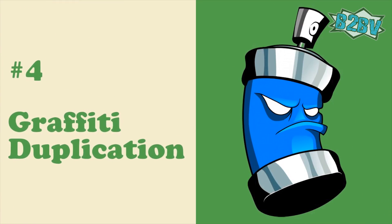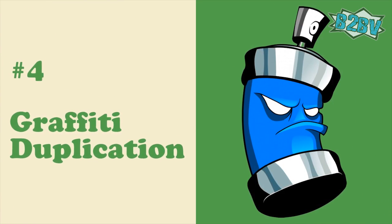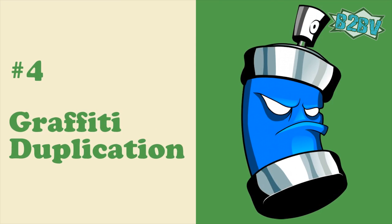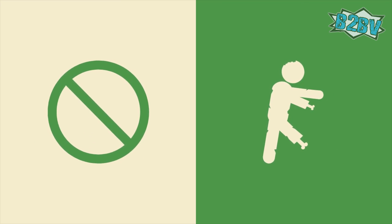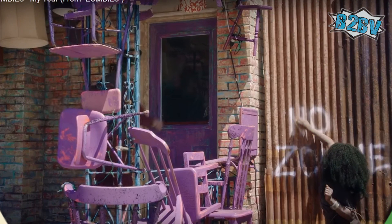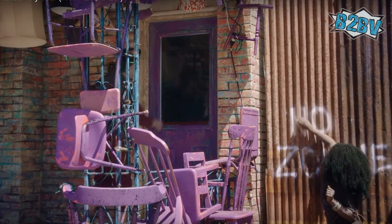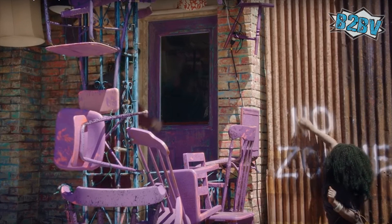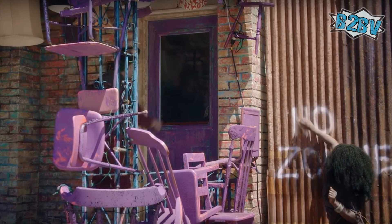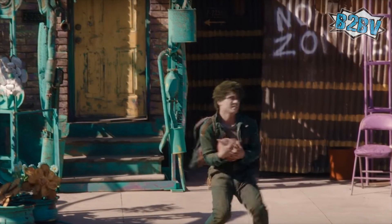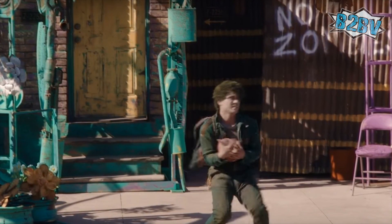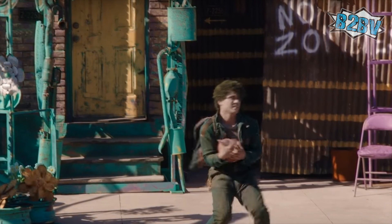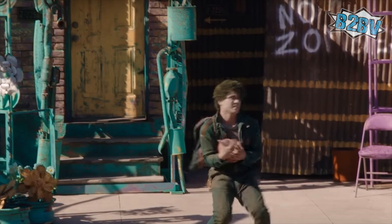Number 4: Graffiti Duplication. There is an inconsistency with the graffiti that says 'No Zombies.' At first, the graffiti is seen by the house with a purple door. However, the same graffiti is seen by a house with a yellow door. The graffiti is exactly the same and on the same piece of corrugated aluminum — thus, it was moved incorrectly.